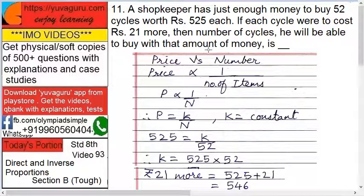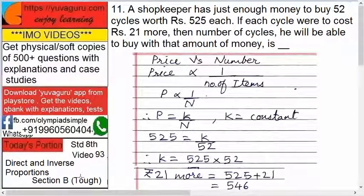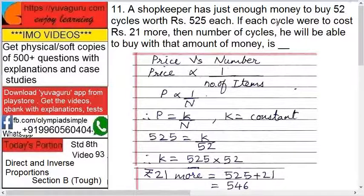Hi friends, welcome to IMO Videos Standard 8, video number 93: Direct and Inverse Proportions, Section B Tough. A shopkeeper has just enough money to buy 52 cycles worth rupees 525 each. If each cycle were to cost rupees 21 more, then the number of cycles he will be able to buy with that amount of money is what?